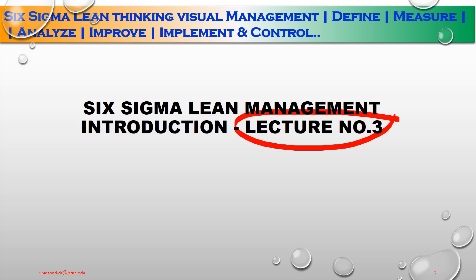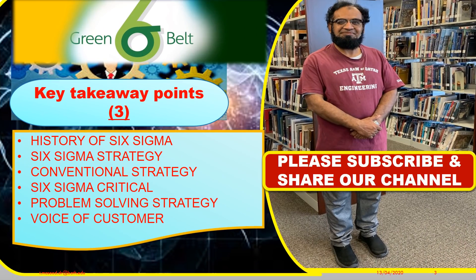We covered DMAIC — Define, Measure, Analyze, Improve and Control Mechanism — key differences between lean and Six Sigma, family methodologies, and history of Six Sigma. These 6 to 7 points were discussed in Lectures 1 and 2. Now the key takeaway points of Lecture No. 3 include: history of Six Sigma, Six Sigma strategy, conventional strategy, Six Sigma critical points, problem solving strategy, and voice of customer using the Six Sigma method.